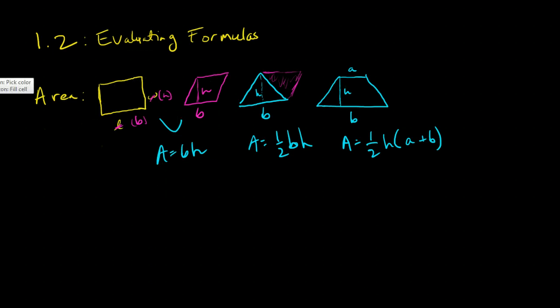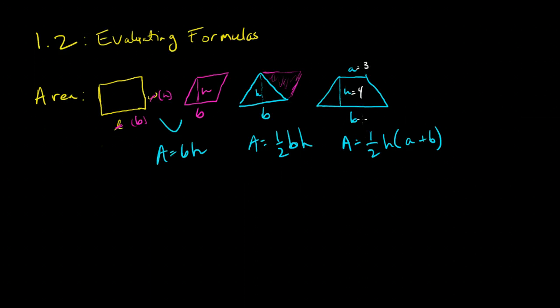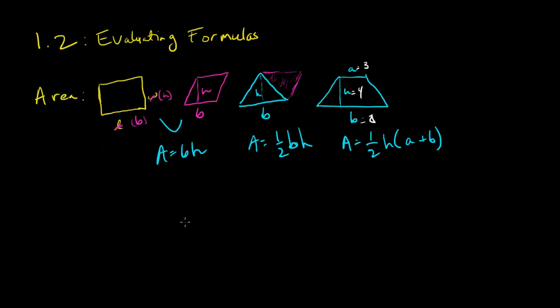Let's say this trapezoid has a height of four and an a of three and a b of eight, we'll say. Then the area of that is, I just use those as my substitution values. Right, a is equal to one half of four times three plus eight.